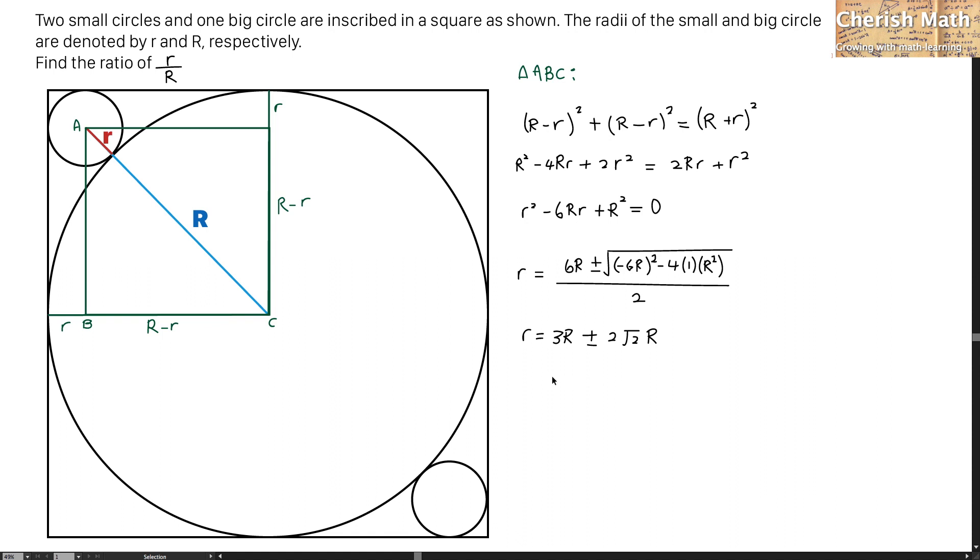For the value of lowercase r written in the simplest form, since lowercase r is smaller than uppercase R, we have to drop the plus sign, and we can only accept the minus. And this is how it goes. This is the only acceptable equation that we got.